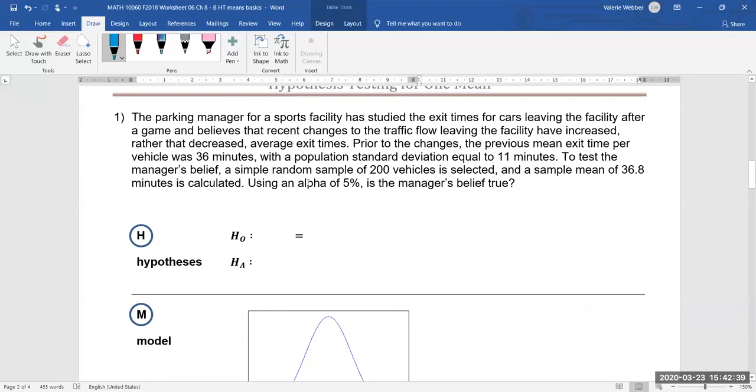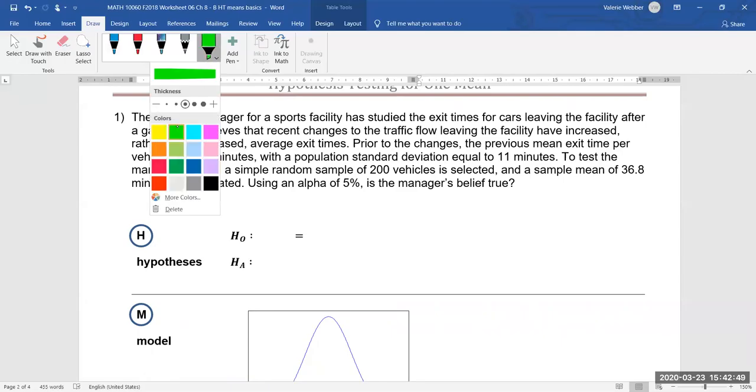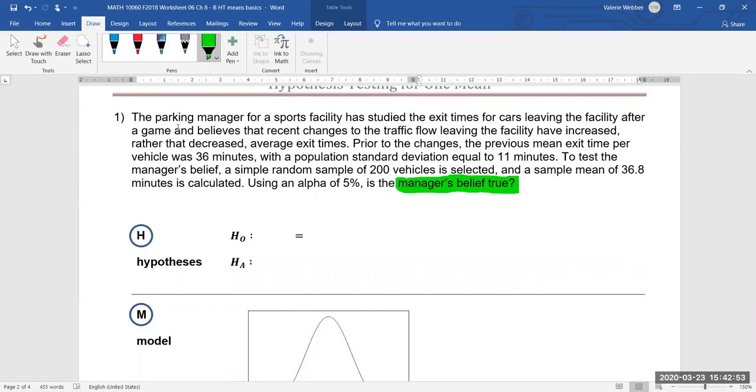So here we want to use an alpha or a level of significance of five percent. Is the manager's belief true? So if we're wondering how we know this is a hypothesis test usually we're looking for some type of statement like this. Okay is the manager's belief true. That's usually an indicator that we have a hypothesis test.